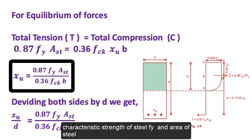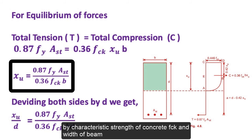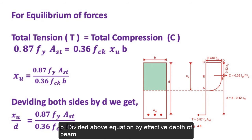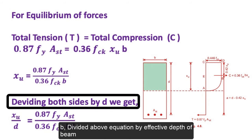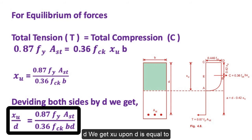Therefore, x_u is equal to (0.87 × f_y × A_st) divided by (0.36 × f_ck × b). Dividing the above equation by the effective depth of beam d, we get x_u upon d.